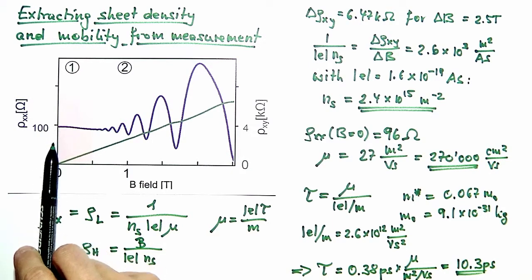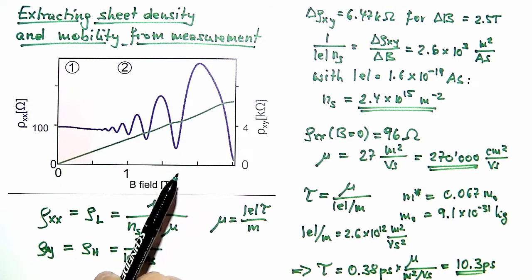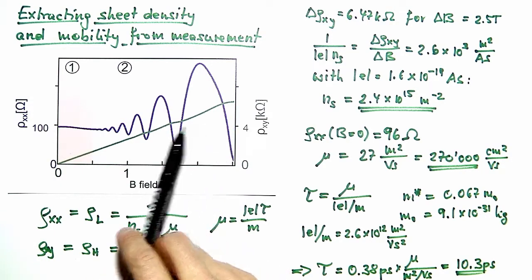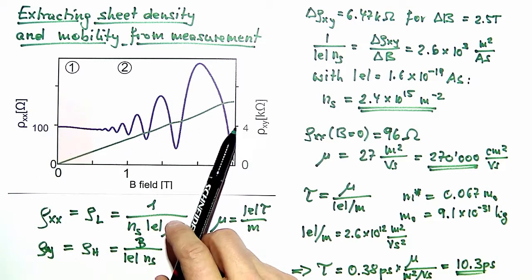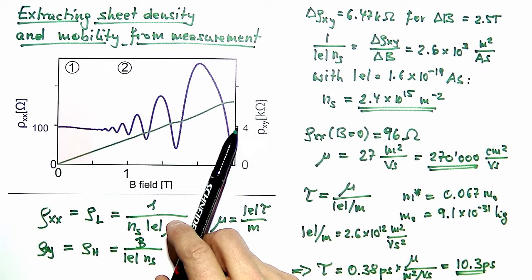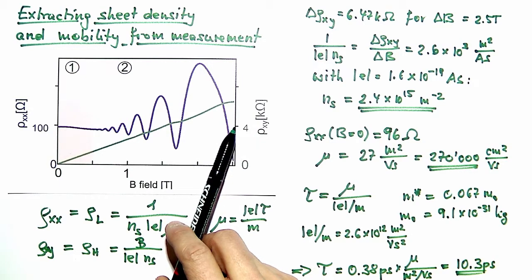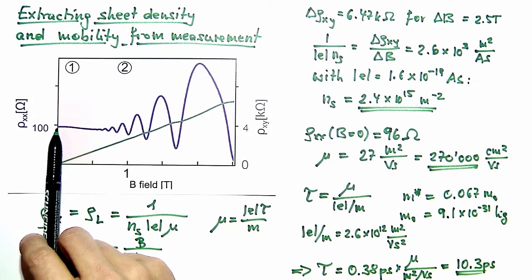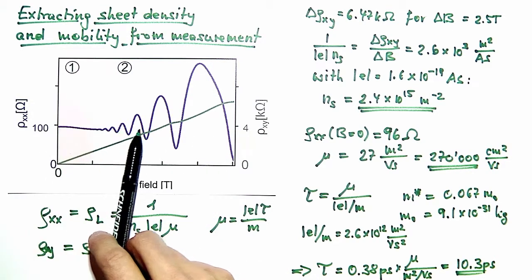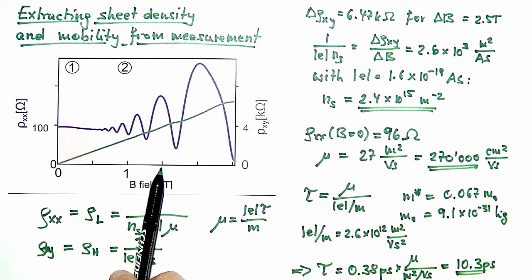And in this particular graph, we have the problem that the scales are different. We have 100 here where we have 4 kilo-ohms there. So there is a factor of 40 change in scale between the two. So we have to consider this factor of 40 later on for scaling the number that we get. So we remember the factor of 40 and look at the point where 100 ohms roughly is reached by the green curve. That is roughly at 1.5 tesla, 3.5 of a tesla.